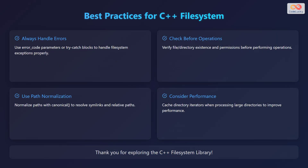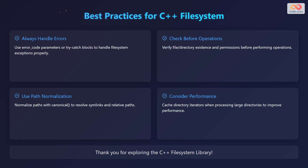Let's go over some best practices for working with the C++ filesystem library. Always handle errors — use error code parameters or try-catch blocks to handle filesystem exceptions properly. Check before operations — verify file or directory existence and permissions before performing operations. Use path normalization — normalize paths with canonical() to resolve symbolic links and relative paths. Consider performance — cache directory iterators when processing large directories to improve performance.